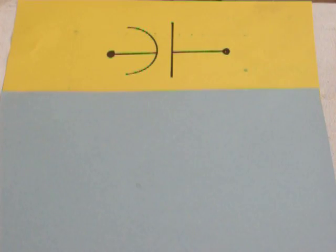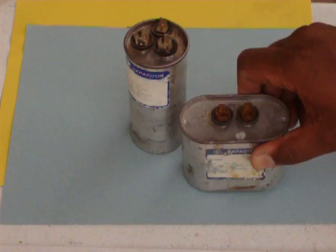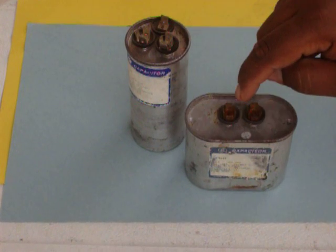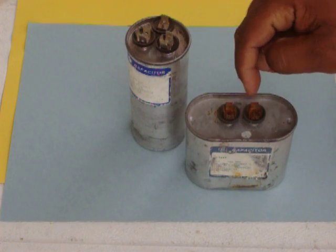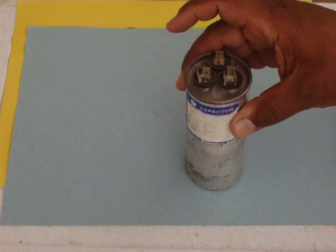Now we're going to show you how to check what they call a dual capacitor. You'll notice this capacitor had two terminals. This one has three terminals. This one has two terminals because it feeds one load. Power comes in. Power goes to one motor.